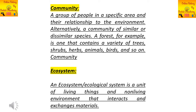Next we discuss community, which is another level of organization of ecology. A community is a group of similar or dissimilar species in a specific area in relation to their environment. For example, in a forest there is a different variety and composition of trees, shrubs, herbs, animals, and birds — all of that together is known as a community.